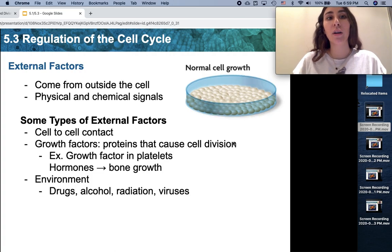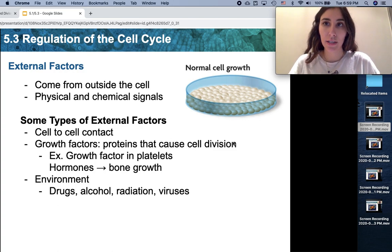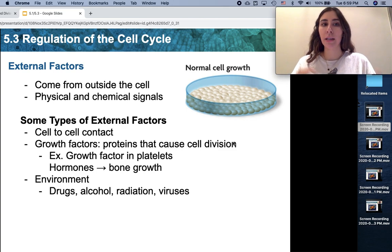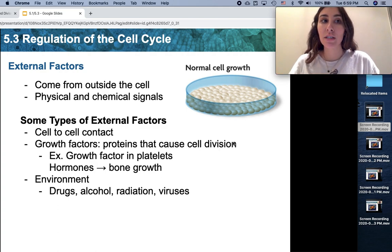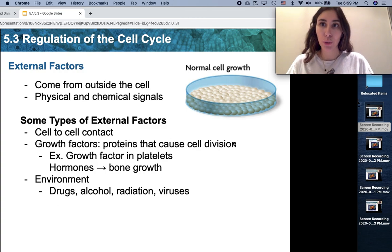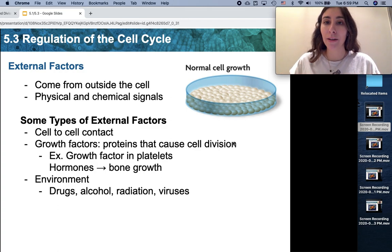The first one I want to talk about are external factors. These regulatory factors, just like their name suggests, come from outside of the cell, and they could be physical factors or chemical signals. An example of a physical external factor is cell-to-cell contact. If we were to grow cells in a lab in a petri dish, just like you see here on the screen,